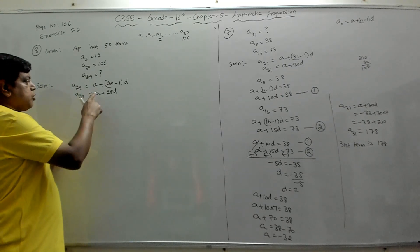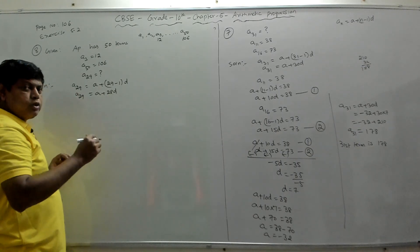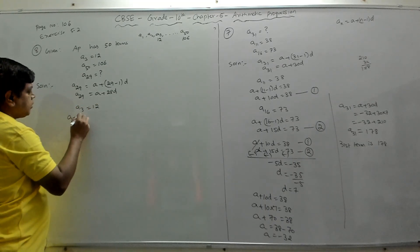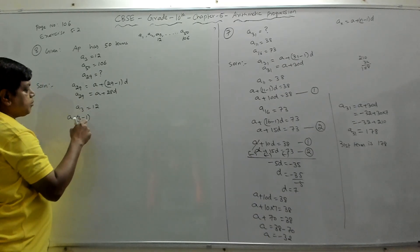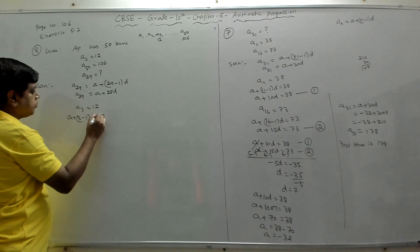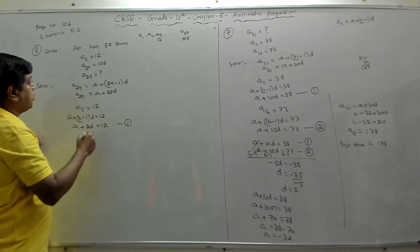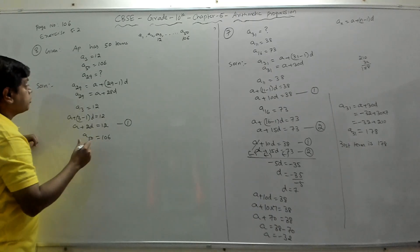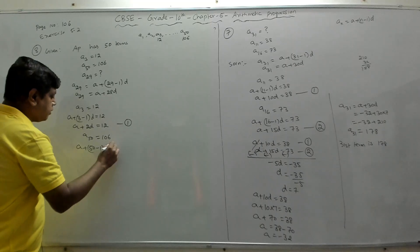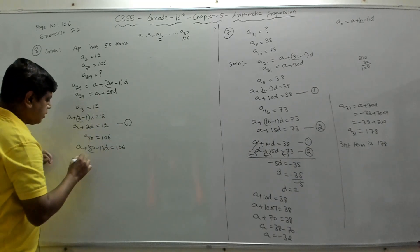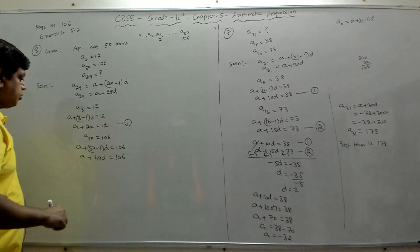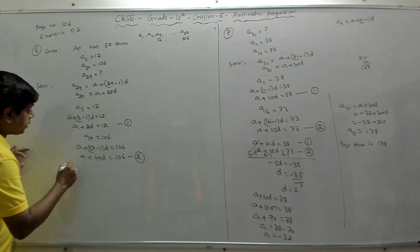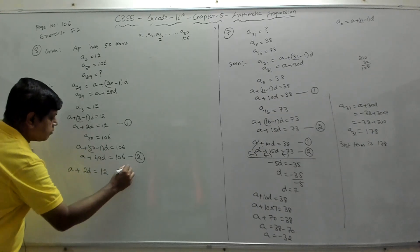Subtracting equation 1 from equation 2: 47d = 94, so d = 94/47 = 2. Substituting d = 2 into equation 1: a + 2×2 = 12, so a + 4 = 12, giving a = 8.